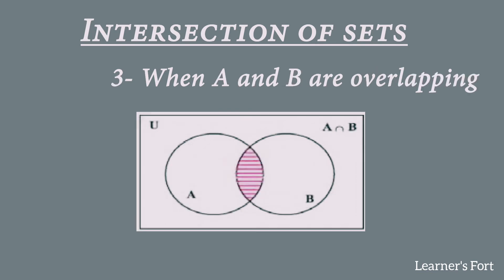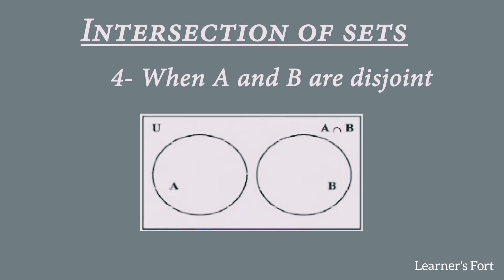The third case is when A and B are overlapping sets — they have a few elements in common. Here the two circles overlap each other, and only the center overlapping portion is shaded, showing the intersection. The common elements between set A and set B are represented by this shaded overlapping portion.